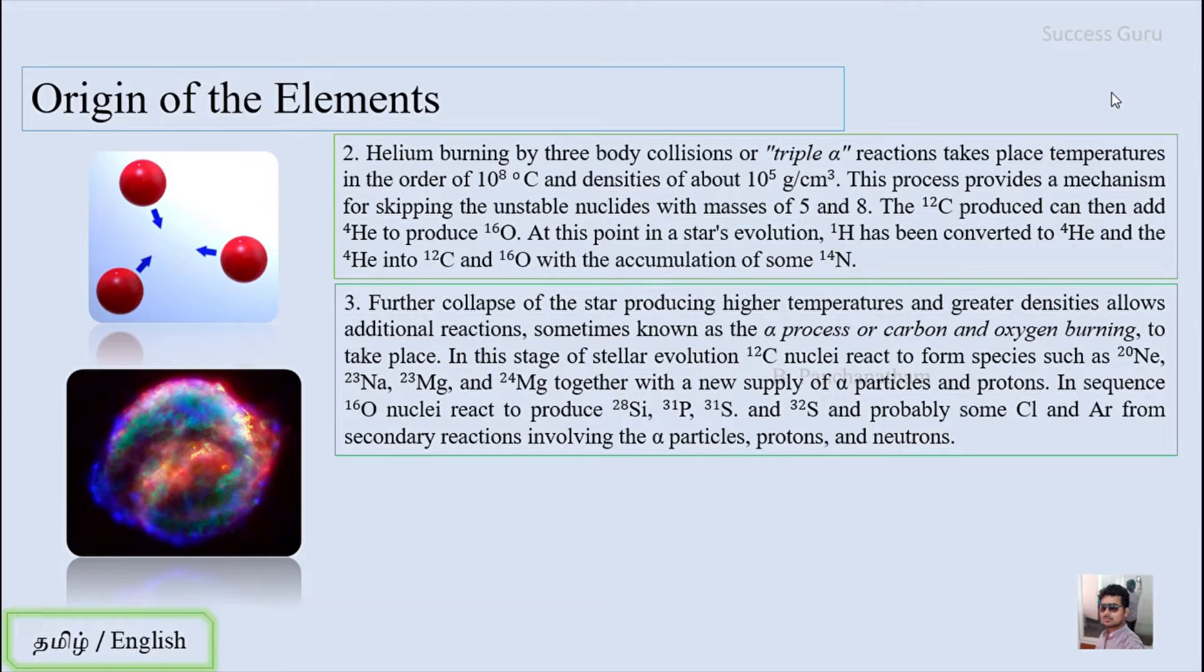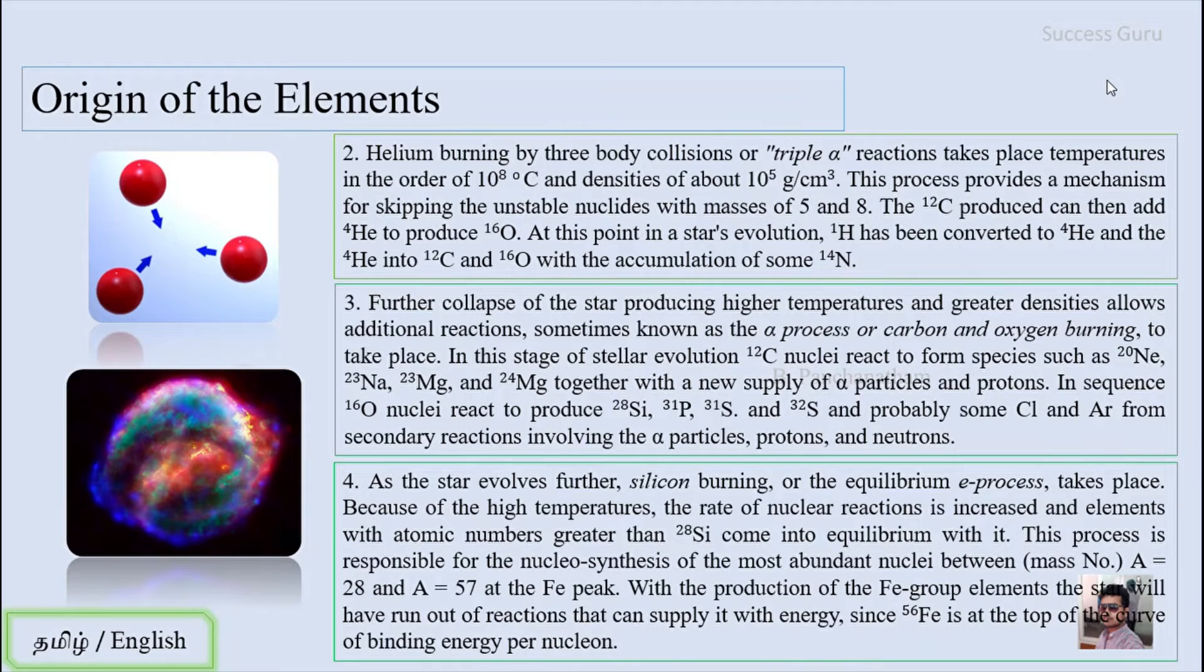As the star evolves further, silicon burning or equilibrium (the e-process) takes place. Because of high temperature, the rate of nuclear reactions increases, and elements with atomic number greater than Si-28 come into equilibrium with it. This process is responsible for the nuclear synthesis of the most abundant nuclei with mass numbers 28 to 57 and the iron peak. With the production of the iron group of elements, the star will have run out of reactions that can supply energy, since Fe-56 is the top of the curve of binding energy per nucleon.